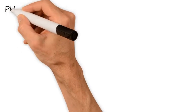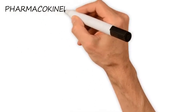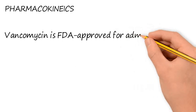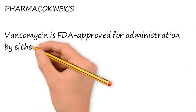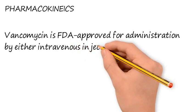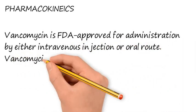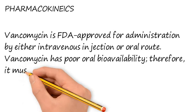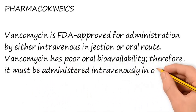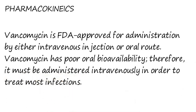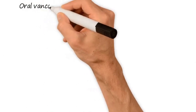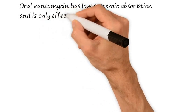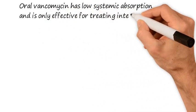Now we discuss pharmacokinetics. Vancomycin is FDA approved for administration by either intravenous injection or oral route. Vancomycin has poor oral absorption or poor bioavailability, therefore it must be administered intravenously in order to treat systemic infections. Oral vancomycin has low systemic absorption and is only effective for treating intestinal infections.